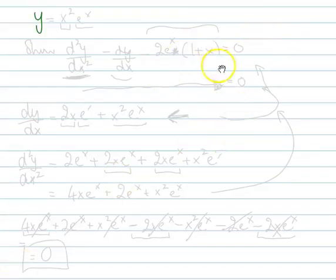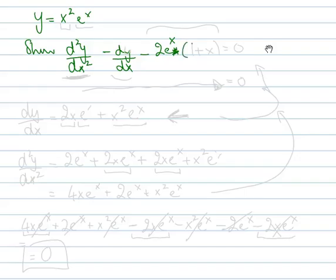OK, so we're given a function here, y equals x squared times e to the x, and we have to show or prove that the second derivative subtract the first derivative, subtract some weird thing here, 2 e to the power of x times 1 plus x equals 0.